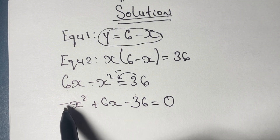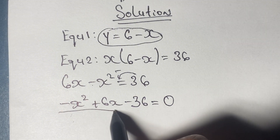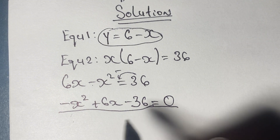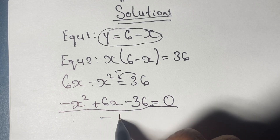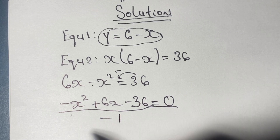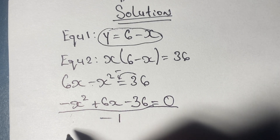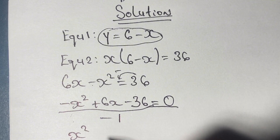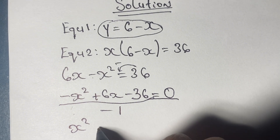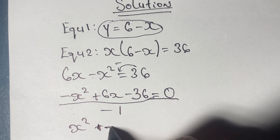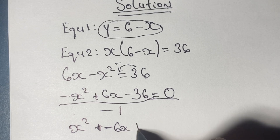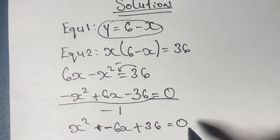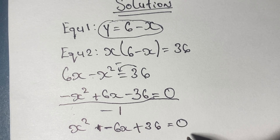Now in our quadratic formula, a cannot be negative, so we divide our equation by negative one. Dividing by negative one will get rid of the negative a value. So we would have x squared minus 6x, and negative into a negative is a positive, so we have positive 36 equal to zero.